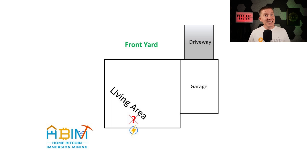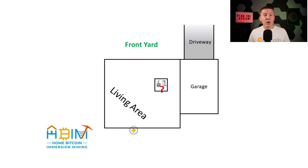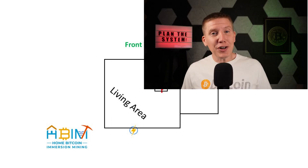The next thing to look at is where other house infrastructure is — where's my furnace, where's my water heater? It turns out that I have a utility room kind of in the center of my house. This location is pretty far away from any exterior wall and far from my power, but maybe it'll work. So let's go take a look.